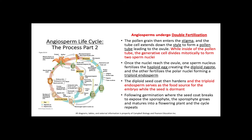Angiosperms undergo double fertilization. The pollen grain enters the stigma and the tube cell extends down the style to form a pollen tube leading to the ovule. Inside the pollen tube, the generative cell divides mitotically to form two sperm nuclei. Once those nuclei reach the ovule, one sperm nucleus fertilizes the haploid egg, creating the diploid zygote, and the other fertilizes the polar nuclei, forming the triploid endosperm. The diploid seed coat then hardens and the triploid endosperm serves as the food source for the embryo while the seed is dormant. Following germination, where the seed coat cracks to expose the sporophyte, the sporophyte grows and matures into a flowering plant and the life cycle repeats.